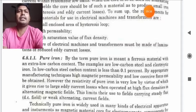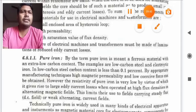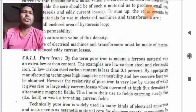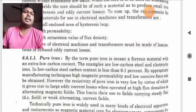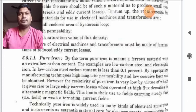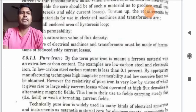However, the resistivity of pure iron is very low by virtue of which it gives rise to large ED current losses when operated at high flux densities in alternating magnetic field. This limits their use to fields carrying steady flux or weak alternating current fields.